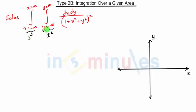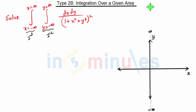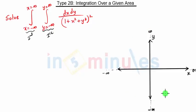First, y is going from minus infinity to infinity. So in the coordinate plane, minus infinity will be somewhere at negative infinity and plus infinity somewhere at positive infinity. X is also going from minus infinity to infinity. This means that this integration will cover the entire x-y plane. So this integration is performed on the entire x-y plane.